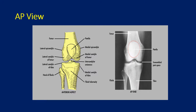The AP view is the most basic x-ray view of the knee. The beam runs from the front to the back, and that x-ray shows the distal femur, proximal tibia, and proximal fibula. You can visualize the patella in front of or behind the femur, the femoral tibial joint space, as well as the fibular head and proximal tibia. You can identify fractures and osteoarthritis.